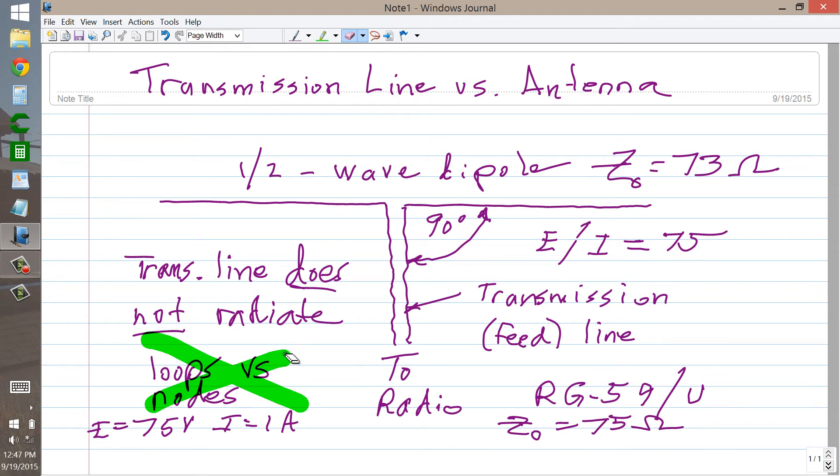Usually there are. Generally, with a properly designed antenna transmission line system, it shouldn't matter whether there are loops or nodes or not. The transmission line should never radiate. But the characteristic impedance Z sub 0 is equal to the 75 volts to 1 amp ratio in this case. How much power do you suppose this transmitter is producing then?